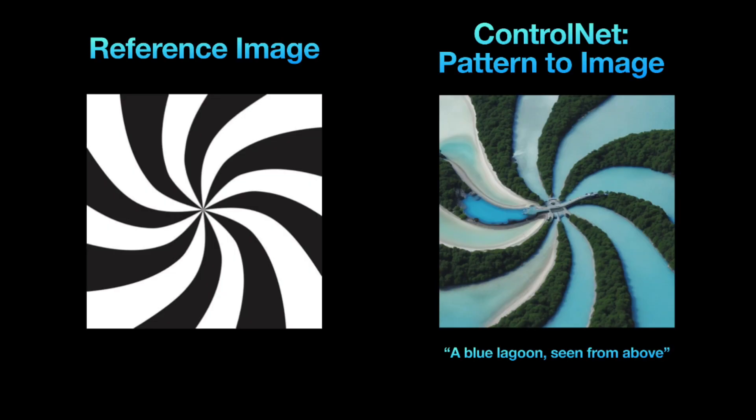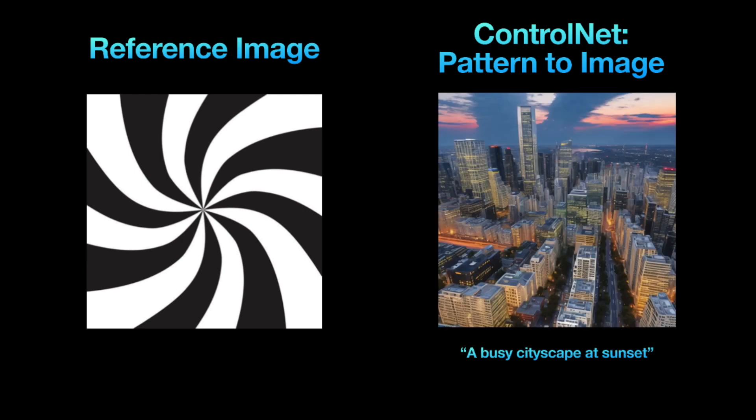Pattern to image spots patterns and tries to recreate them in your pictures. It works well with bold black and white patterns like the one on the left. For instance, I made an image with the prompt 'A blue lagoon seen from above.' Here's another example using the same pattern to create a cityscape at sunset.